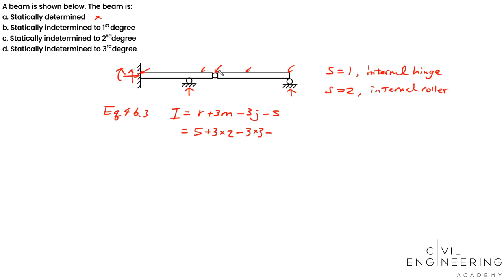Since for an internal hinge, you will provide an additional equation which is the summation of moment at this point, at this joint, equals to zero. It is not going to transfer any moment. You only transfer shear and axial force. So that means we can add another equation to solve for the reactions, so we minus.